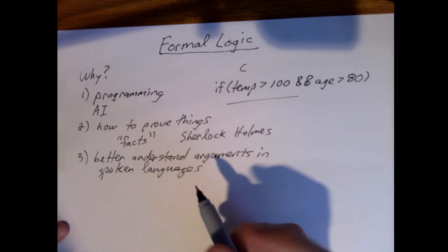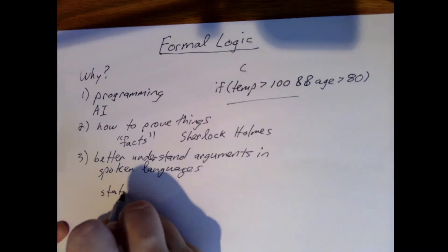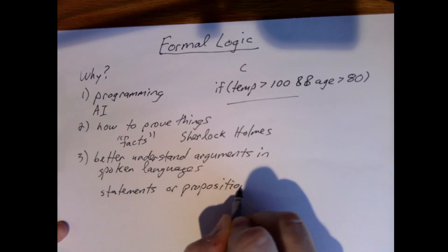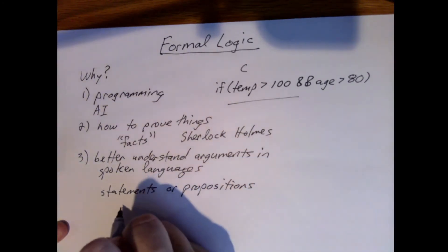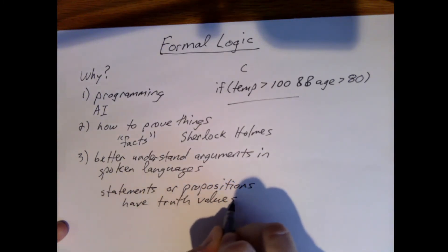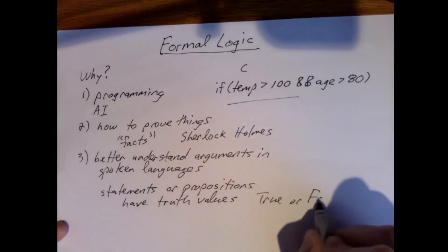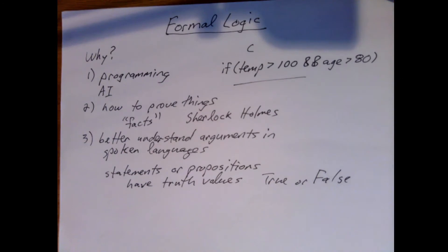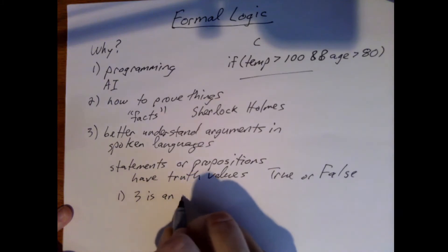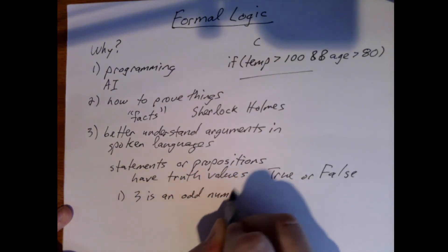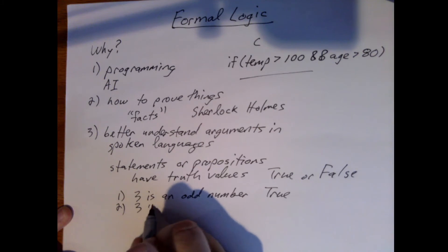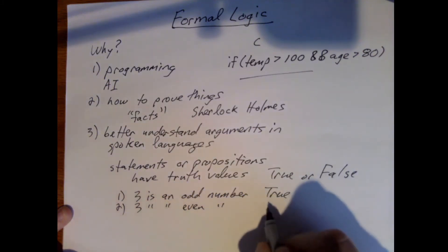Many of the things that we're going to do will deal with what are called statements, or some people call these propositions. And these are things that have truth values—that is, they're true or they're false. For example, if I say 3 is an odd number, we know that's true. I could also say that 3 is an even number, but we know that to be false.